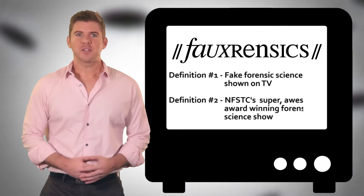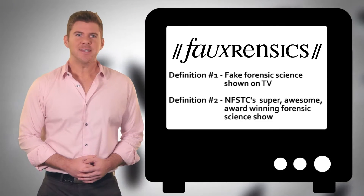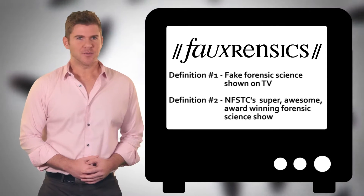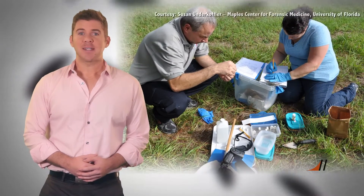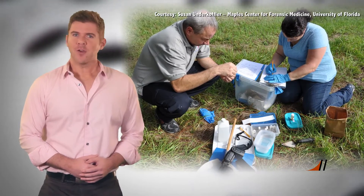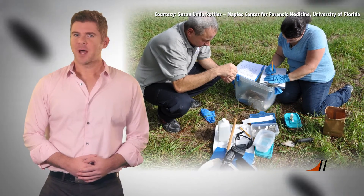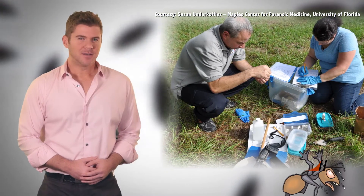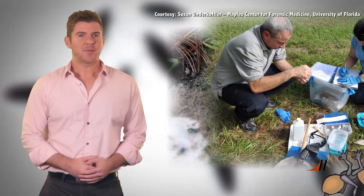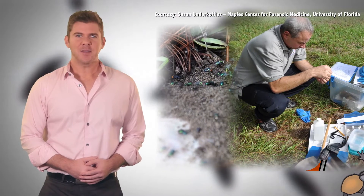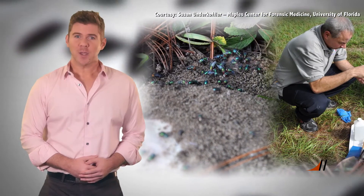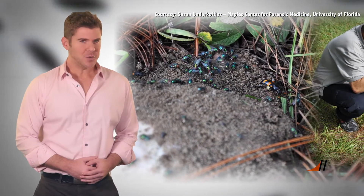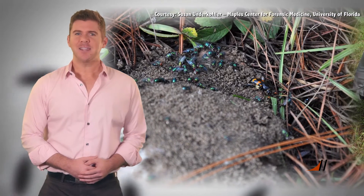Nothing bugs a forensic scientist more than seeing their work portrayed incorrectly on television. Take the forensic entomologist, for example. They are often a clever plot device portrayed as being the key to cracking any homicide — magically determining the time of death right down to the millisecond just by taking a quick glance at a couple of crime scene cooties. But what exactly is forensic entomology, and how is it used in the real world?